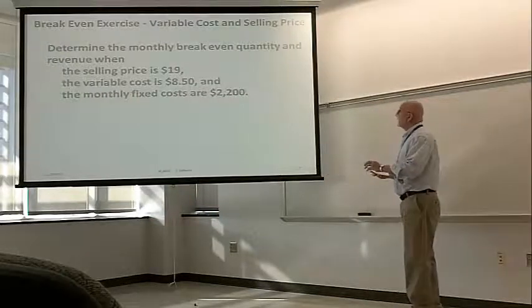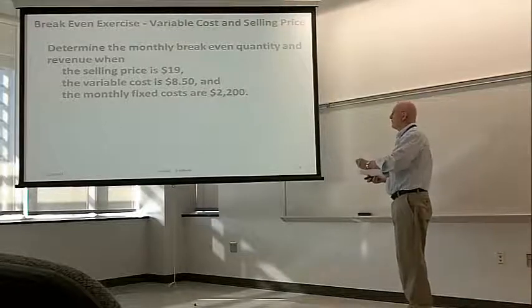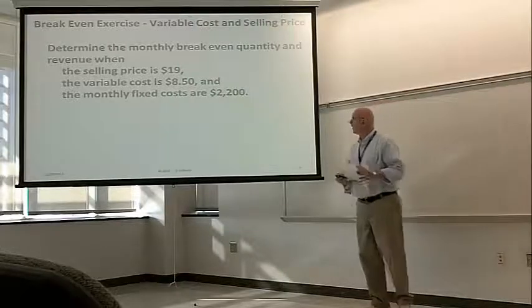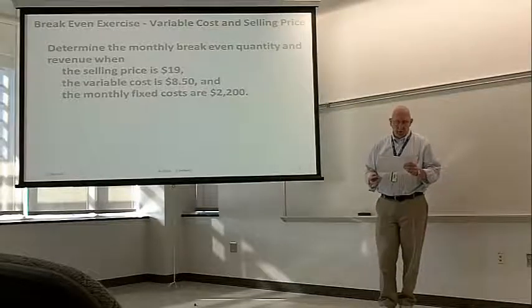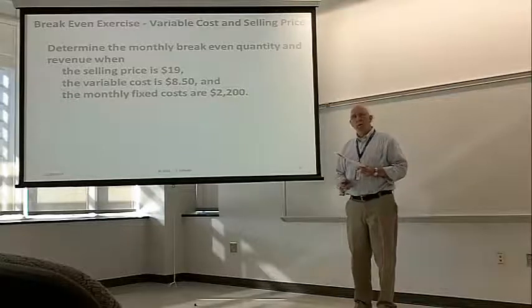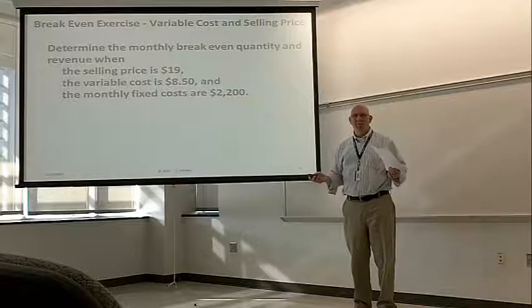Another one, determine the monthly breakeven quantity and revenue when the selling price is $19, the variable cost is $8.50, and the monthly fixed costs are $2,200. Pause it and calculate or just watch.